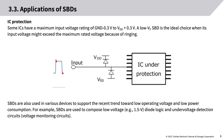For IC protection, some ICs have a maximum input voltage rating of ground minus 0.3V to VDD plus 0.3V. A low VF SBD is the ideal choice when the input voltage might exceed the maximum rated voltage due to ringing. SBDs are also used in various devices to support the trend toward low operating voltage and low power consumption.